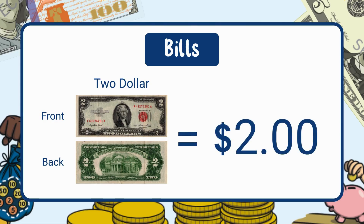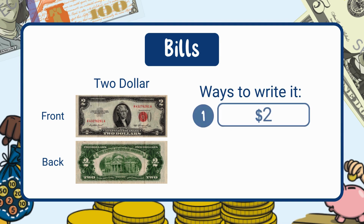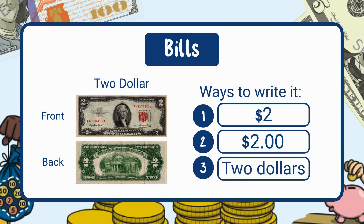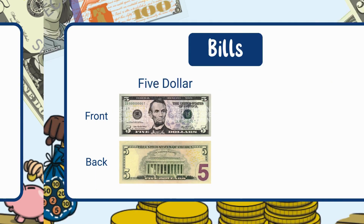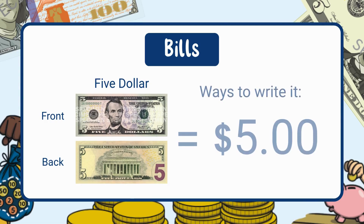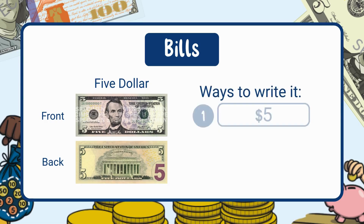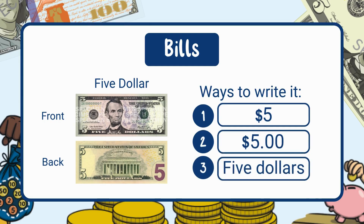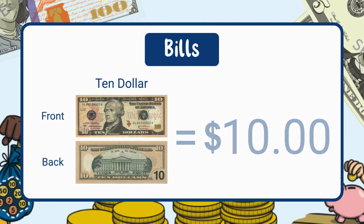This is a two dollar bill. It's worth two dollars. Ways to write it: standard form, two dollars; decimal form, two dollars; written form, two dollars. Next we have a five dollar bill — it's worth five dollars. Ways to write it: standard form, five dollars; decimal form, five dollars; written form, five dollars. Here's a ten dollar bill — it's worth ten dollars.